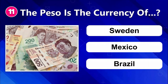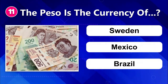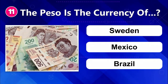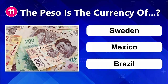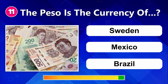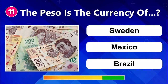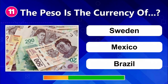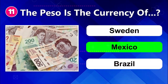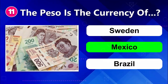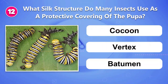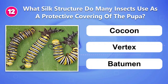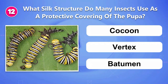Number eleven: The peso is the currency of Sweden. Number twelve: What silk structure do many insects use as a protective covering of the pupa? Cocoon.